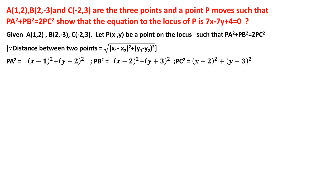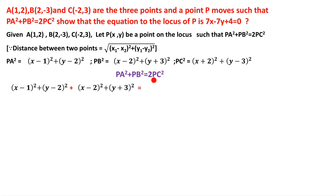Now we have PA², PB², and PC², so we substitute into the given equation PA² + PB² = 2PC²: (x - 1)² + (y - 2)² + (x - 2)² + (y + 3)² = 2[(x + 2)² + (y - 3)²]. These terms are in the form of (a - b)² or (a + b)², so we expand using the corresponding formulas.